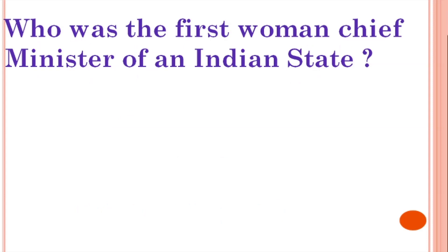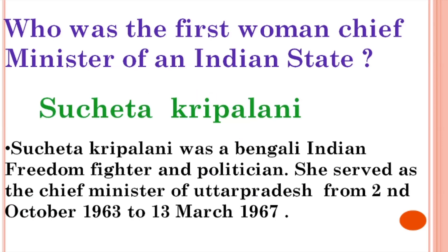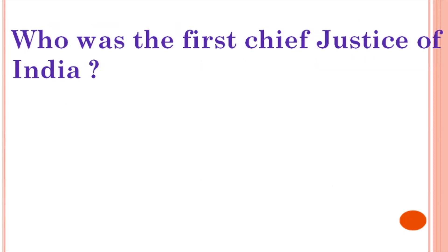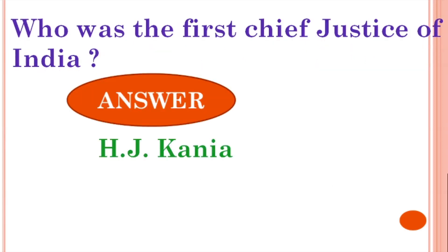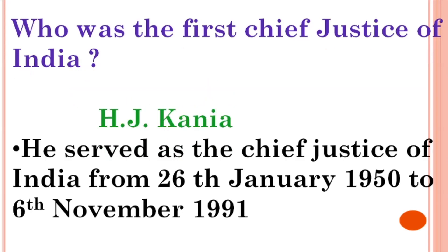Who is the first woman Chief Minister of an Indian state? Answer: Sucheta Kriplani, a Bengali Indian freedom fighter and politician, served as the Chief Minister of Uttar Pradesh from 2nd October 1962 to 13th March 1967. Who was the first Chief Justice of India? Answer: H.J. Kania, who served as Chief Justice of India from 26 January 1952.